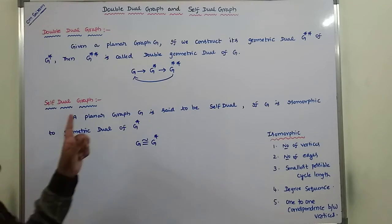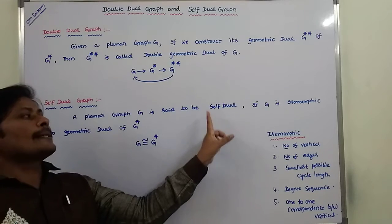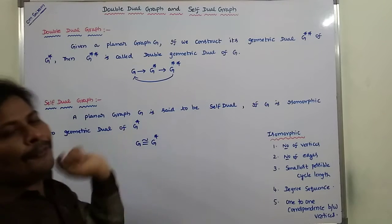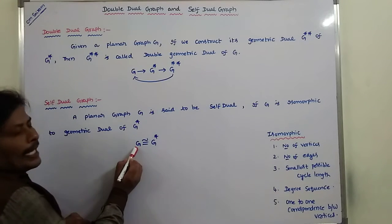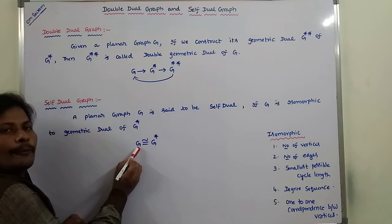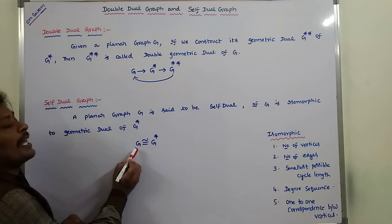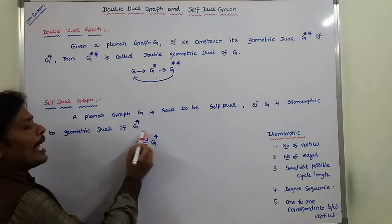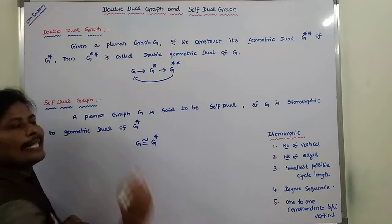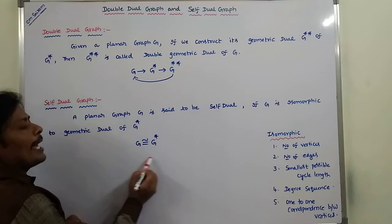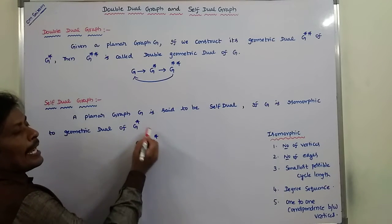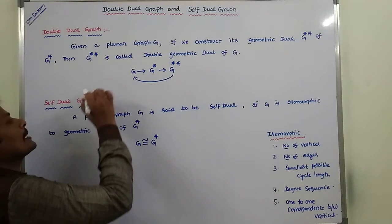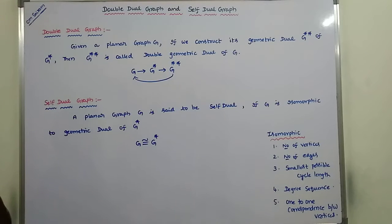Self-dual graph: a planar graph G is said to be self-dual if G is isomorphic to its geometrical dual G star. So given graph G, we construct the dual planar graph G star. By observing these two graphs, if there is an isomorphism between G and G star, and that isomorphism property is satisfied, then we say that the graph is called a self-dual graph.